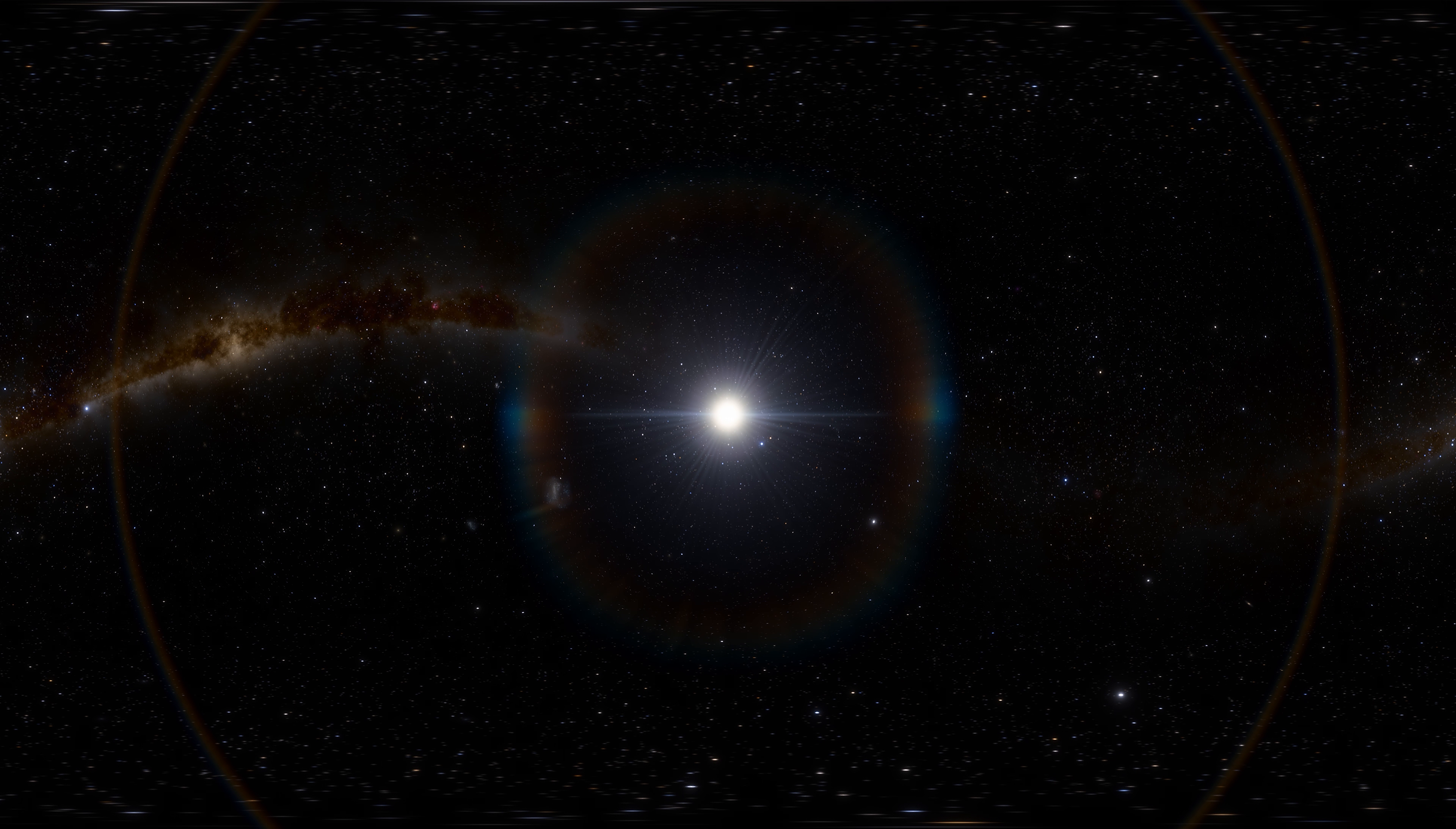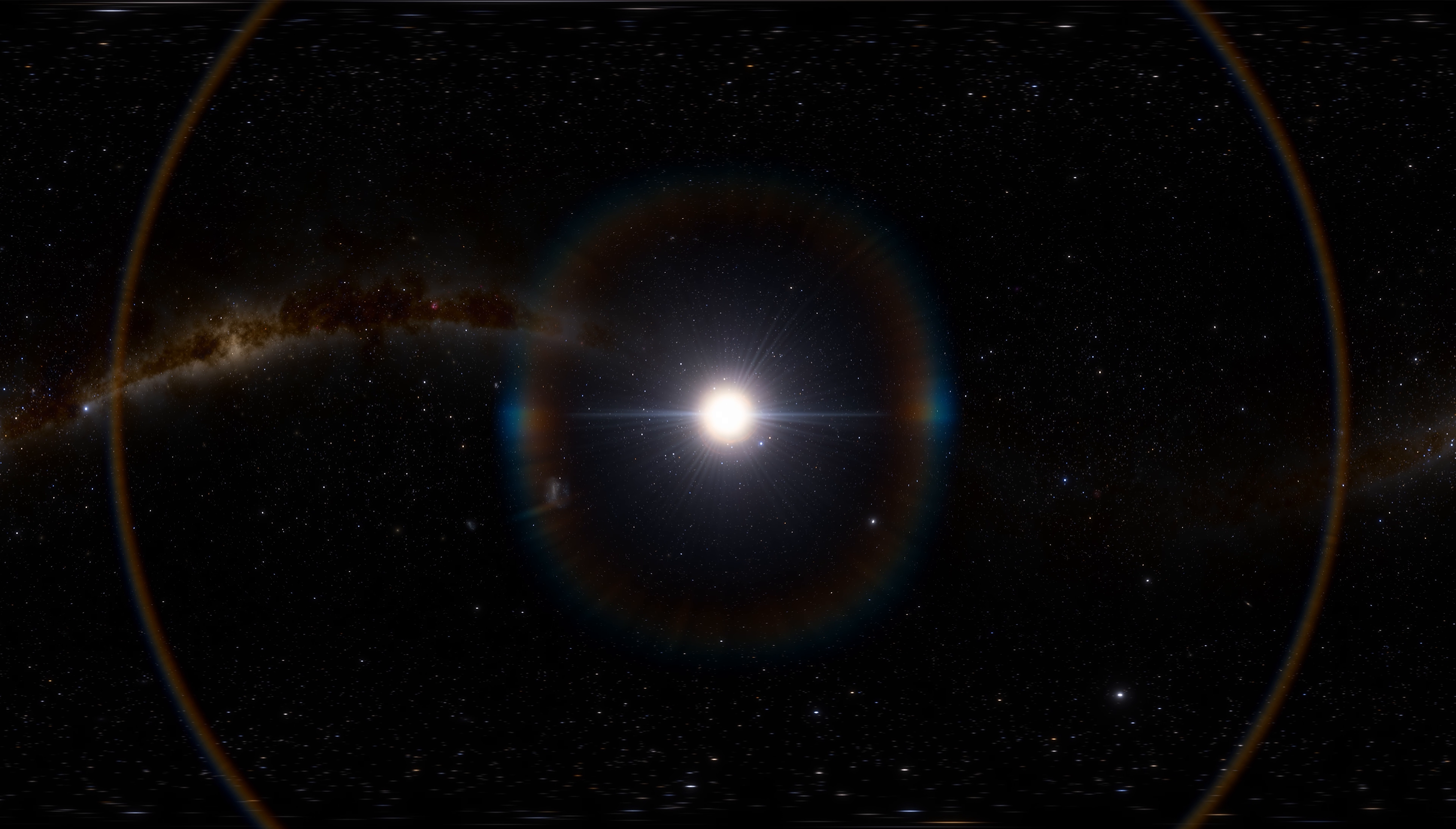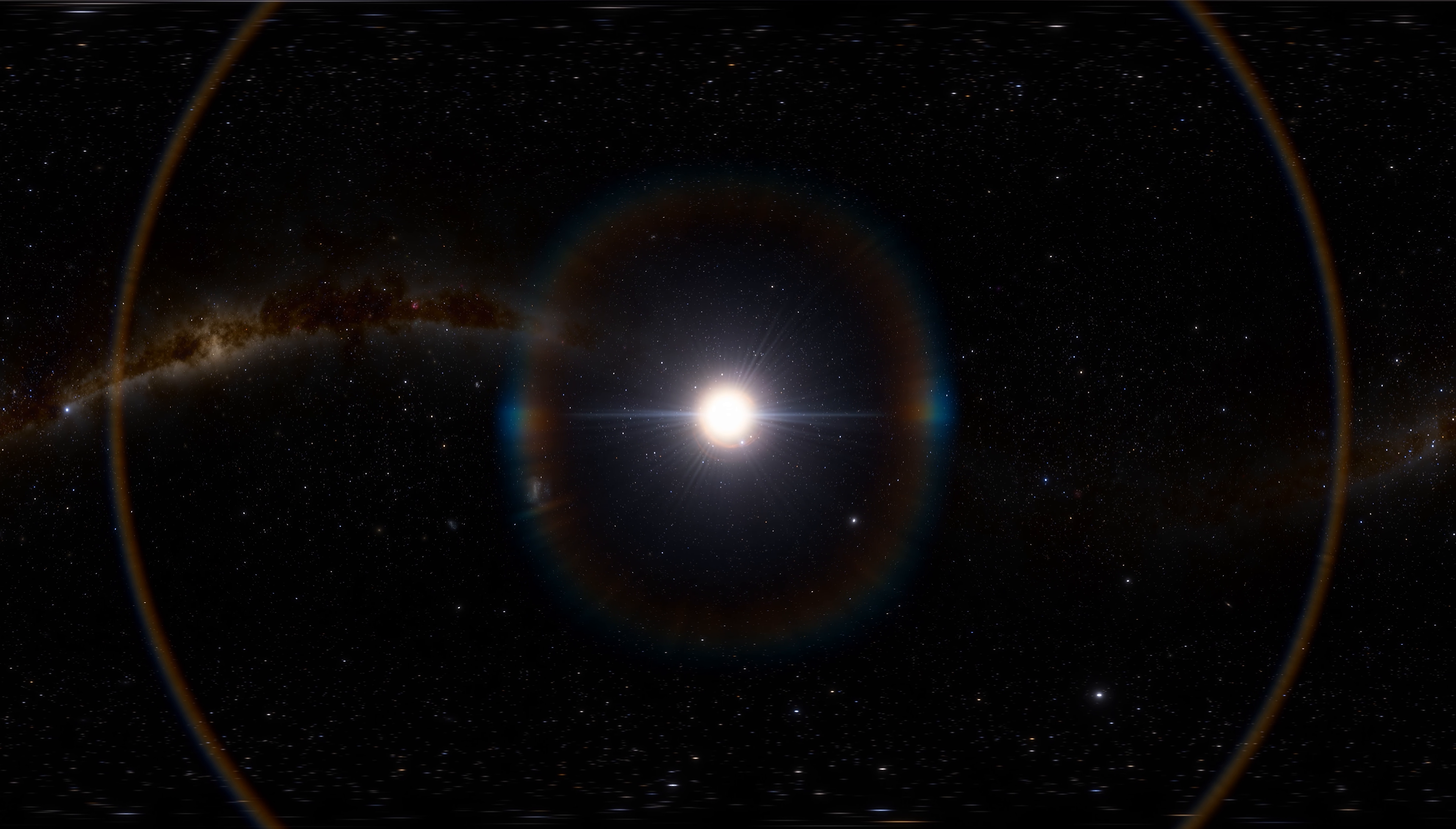VY Canis Majoris is a red hypergiant in the Canis Major constellation. It is placed about 4,900 light-years away from the Sun. It is a real giant which, if placed in our solar system, would absorb all of its internal planets and even Jupiter with its orbit.